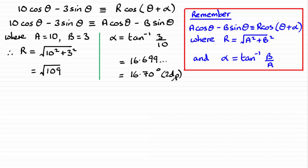And so if we just summarize now, we can see that what we've got is that 10 cos θ minus 3 sin θ is identical to the root of 109 cosine of θ plus 16.70 degrees.